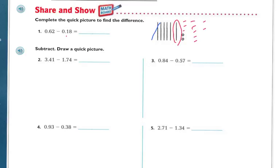So I'm going to subtract 1 of the tenths, and then I need to subtract 8 of the hundredths. I cross out 5 here, and there are 3 more to make that be 8. So what I'm left with is 4 of the tenths — so decimal 4. And I'm left with 4 of the hundredths. So the answer is 0.44.